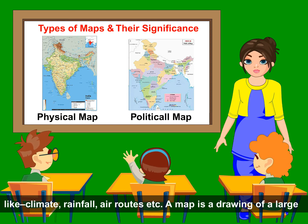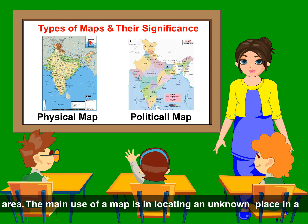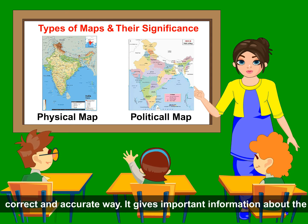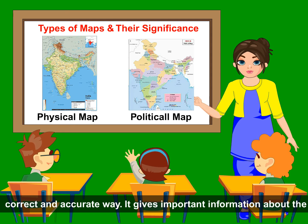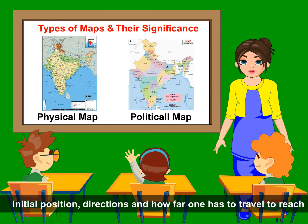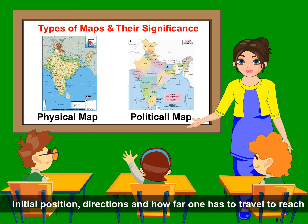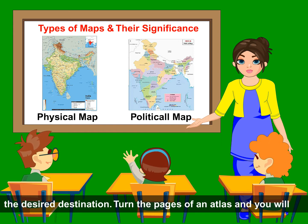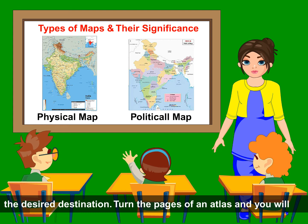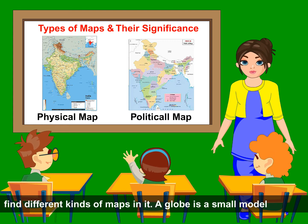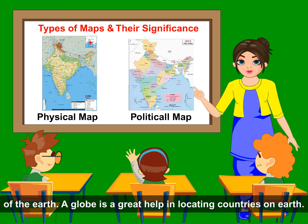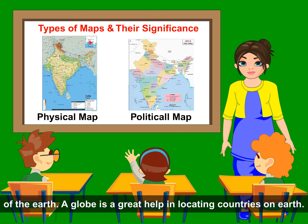A map is a drawing of a large area. The main use of a map is in locating an unknown place in a correct and accurate way. It gives important information about the initial position, direction, and how far one has to travel to reach the desired destination. Turn the pages of an atlas and you will find different kinds of maps in it. A globe is a small model of the Earth and a great help in locating countries on Earth.